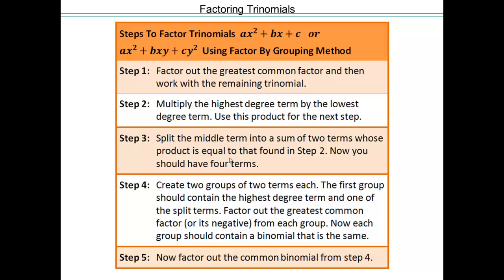So here are the steps to factor trinomials of the type ax² + bx + c or ax² + bxy + cy² using the factor by grouping method. The first thing is to always, no matter what factoring problem you're working with, factor out the greatest common factor and then work with the remaining trinomial. So once you did that, then multiply the highest degree term with the lowest degree term and then find two numbers that multiply to give you that product but add to give you the bx and then factor by grouping to finish it off.